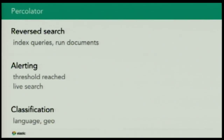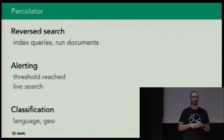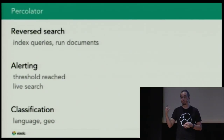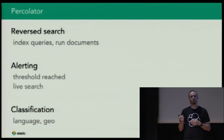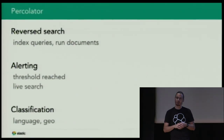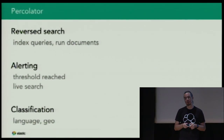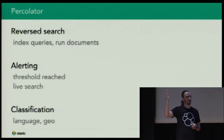This is if you're doing search and you know what you're looking for. But sometimes it's the other way around — you don't have the document but you have the query and want to find the document. Imagine you want to do alerting: you're indexing stock prices and want to be alerted whenever a price rises above a certain value. What we can do with the percolator feature of Elasticsearch is to index that query into Elasticsearch, and then show it a document — it will tell you all the queries that matched.